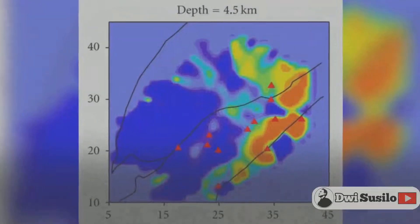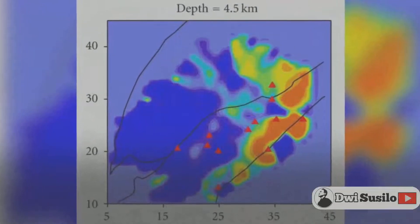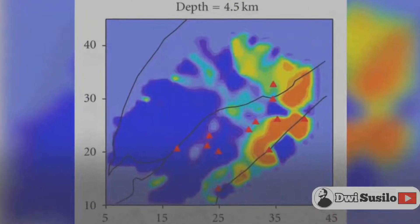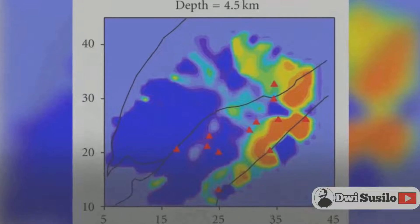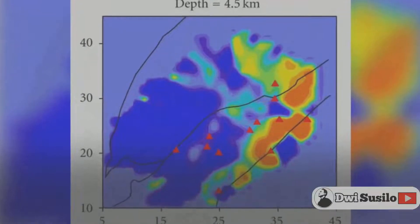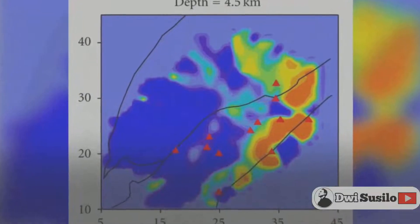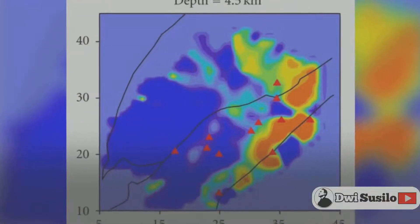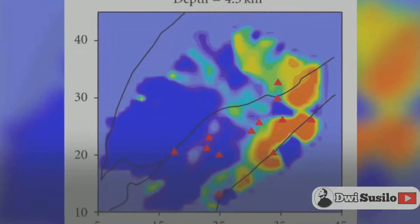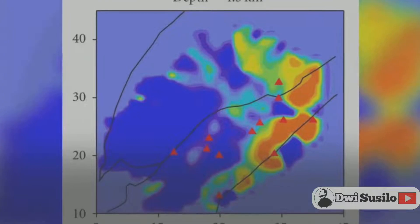An example from volcanoes is when pressure is built up onto the surface, it needs to be released and this sudden explosion can cause seismic waves, which results in an earthquake.